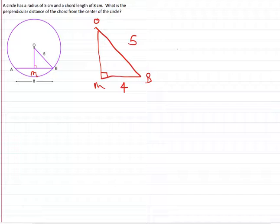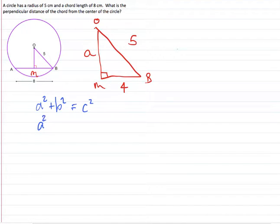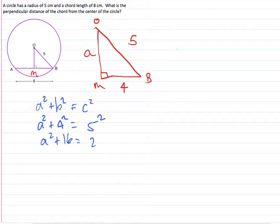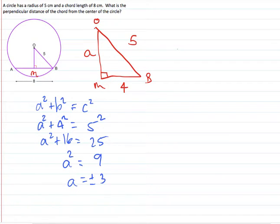We want to find side a. Using the Pythagorean theorem, a squared plus b squared equals c squared. We don't know a, but b is 4 and c is 5, so a squared plus 16 equals 25. Subtracting 16 from both sides gives a squared equals 9. Taking the square root of both sides, a equals plus or minus 3. Because we have a length it cannot be negative, so the perpendicular distance is 3 centimeters.